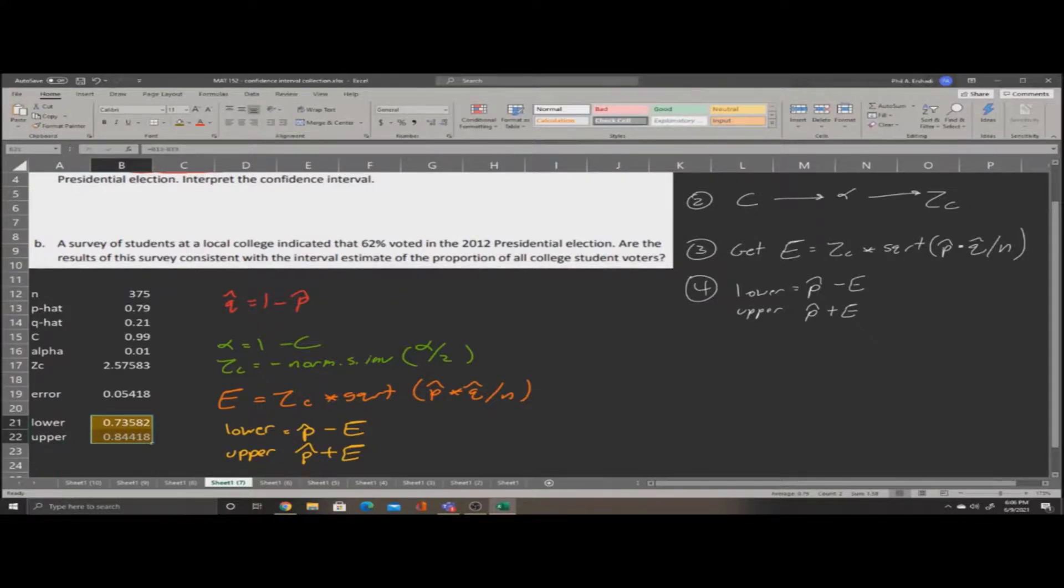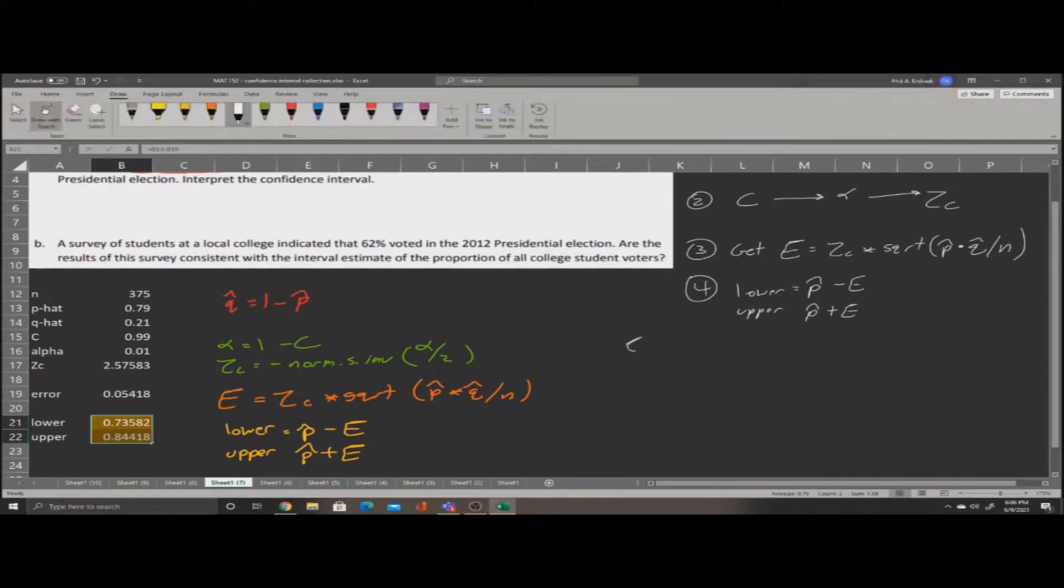Now, let's draw a picture to symbolize this. Our marker on the left will be 0.73582. And our marker on the right will be 0.84418. Our confidence interval exists between these. This means we can say, with 99% confidence, that the true proportion of students who voted in the presidential election are between these numbers.